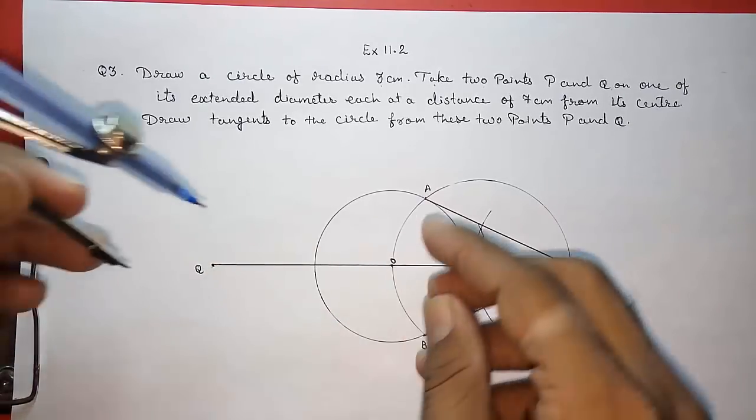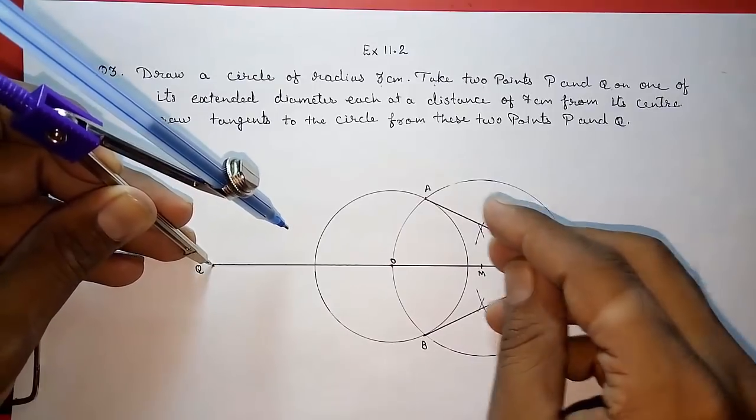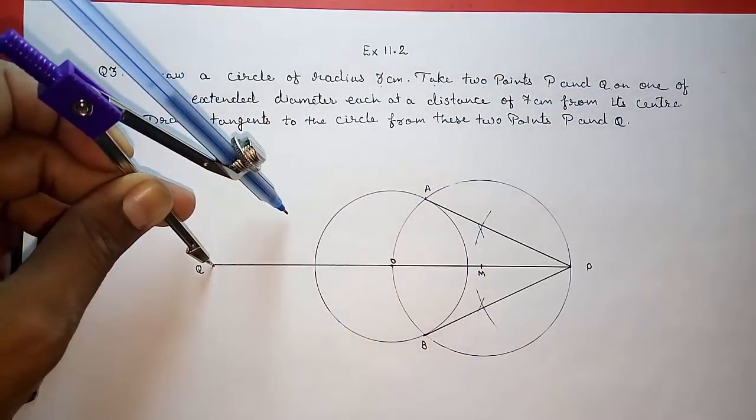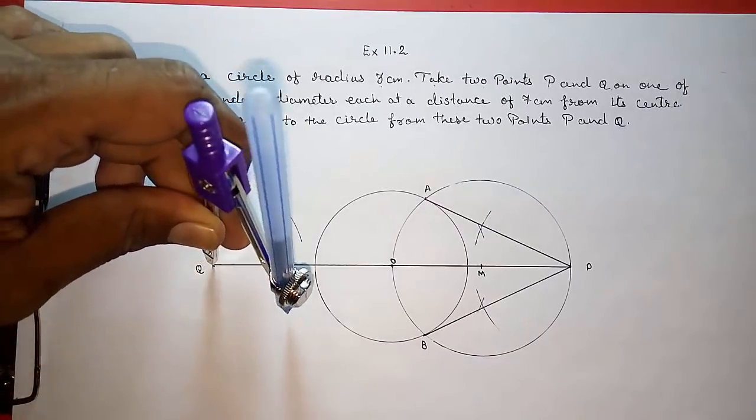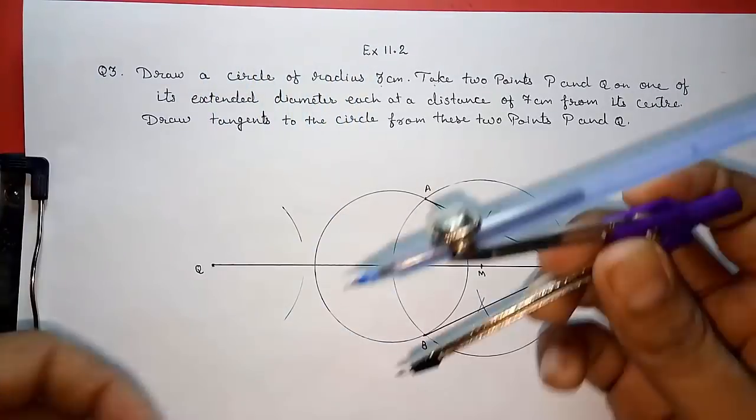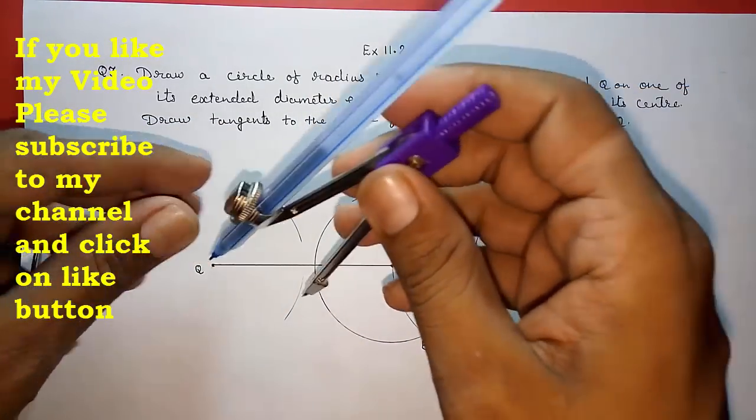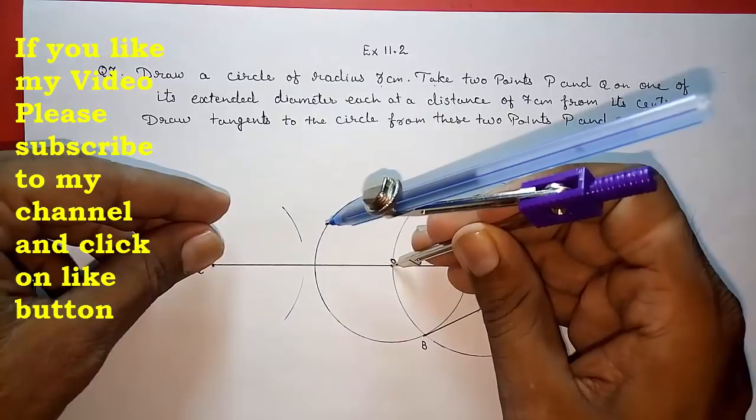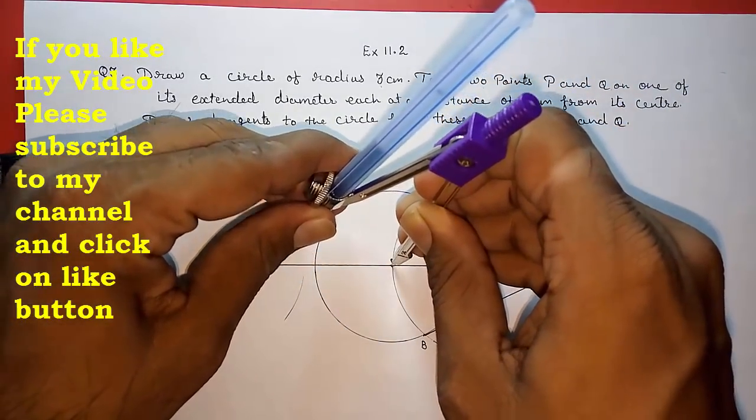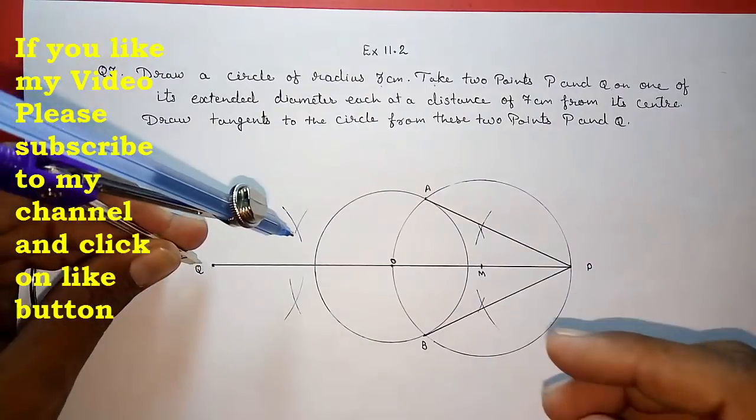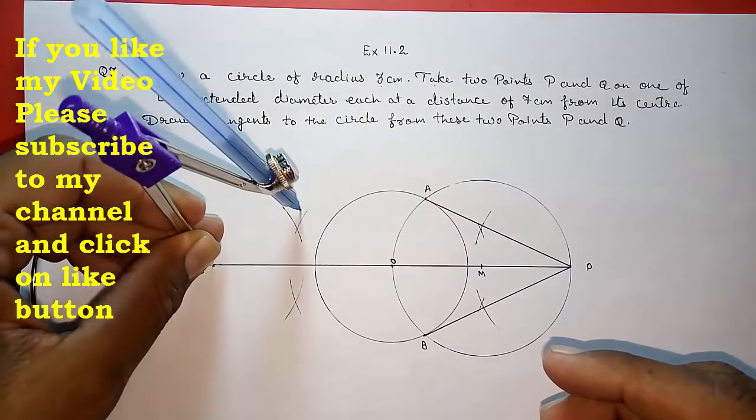So first we are going to find the midpoint of O and Q by drawing perpendicular bisector. Look here I am drawing two arcs from this side also. Okay. It is not more than half that so I got this problem. This is not the correct one. Now we will get yes.